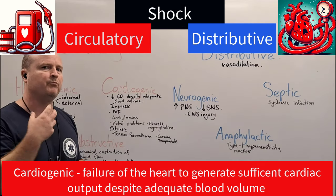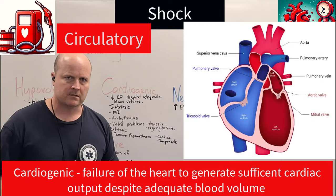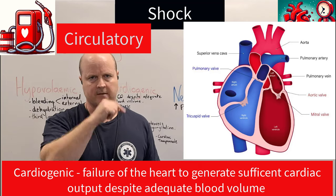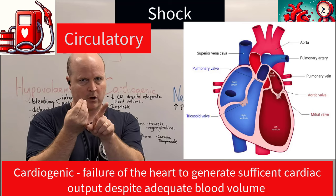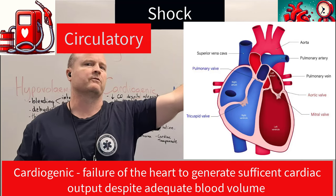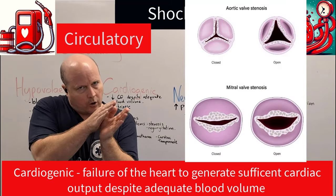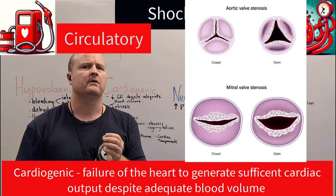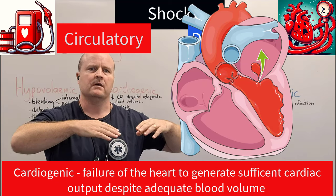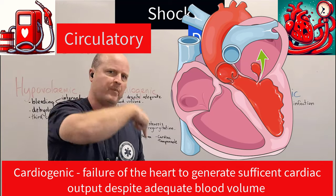Arrhythmia is another intrinsic cause — the heart isn't beating correctly and therefore we're not circulating enough cardiac output. We can also have valve problems. We have four valves in the heart: between the atrium and ventricle on either side, the pulmonary valve leaving the right ventricle going to the lungs, and the aortic valve leaving the left ventricle going to the aorta. They can have stenosis where they're not opening enough, decreasing cardiac output, or regurgitation where the valve buckles and lets blood flow back in the wrong direction.